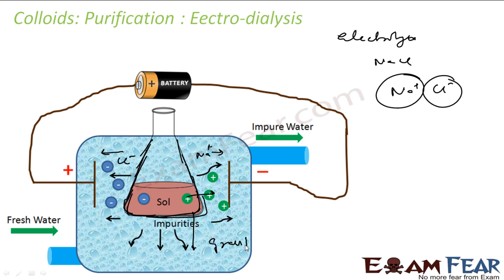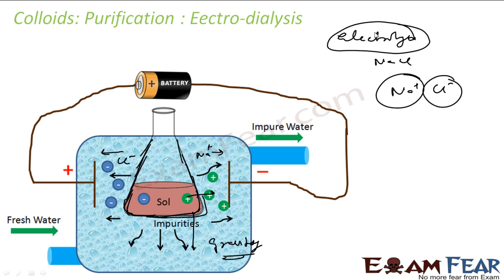More and more electrolytes move toward the left and right due to the electric field, exiting the colloidal bag faster. Electro-dialysis is generally used when the colloid contains a large amount of electrolytes that need to be removed quickly. Everything else remains the same as ordinary dialysis — only the electric field is added.